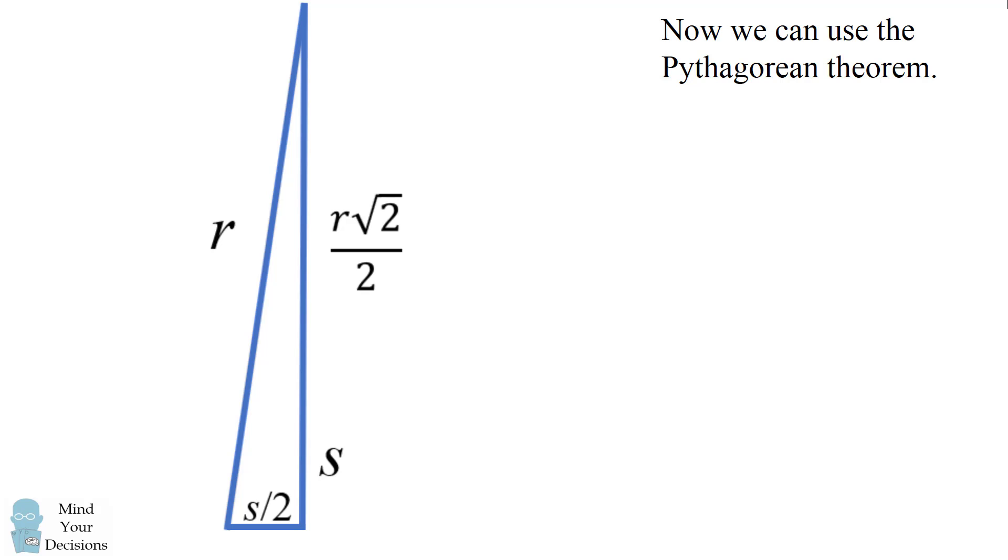We're going to use the Pythagorean theorem. We have the sum of the squares of the lengths of the legs will be equal to the square of the hypotenuse.